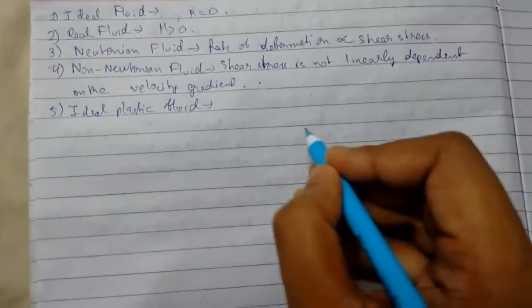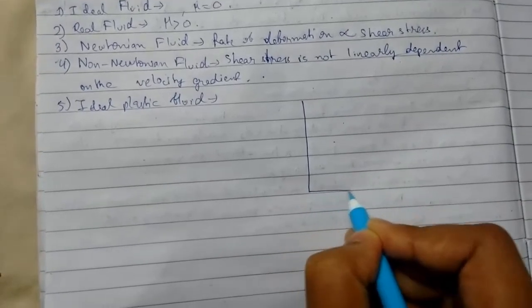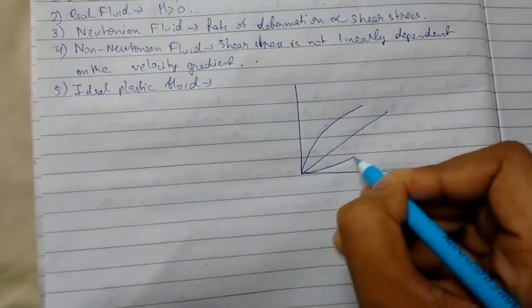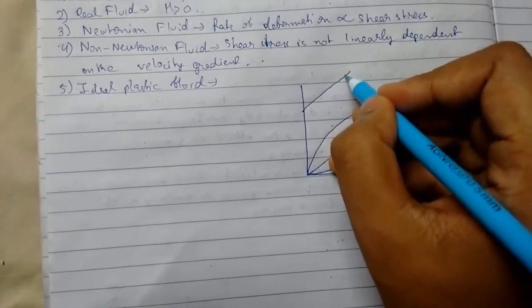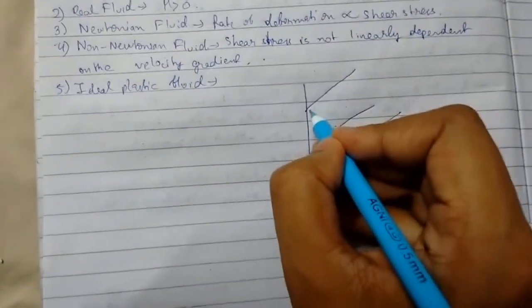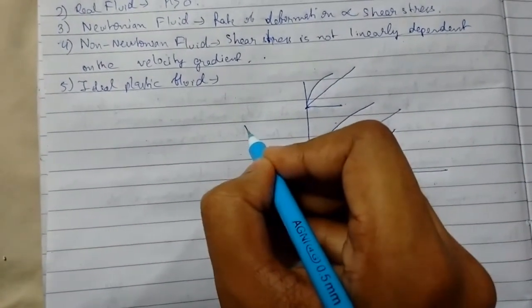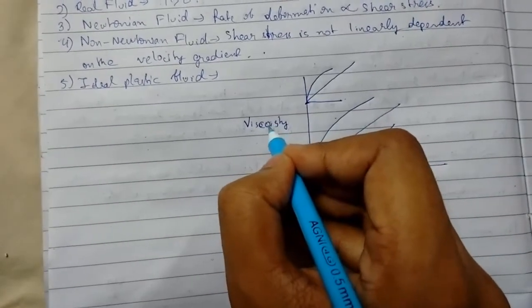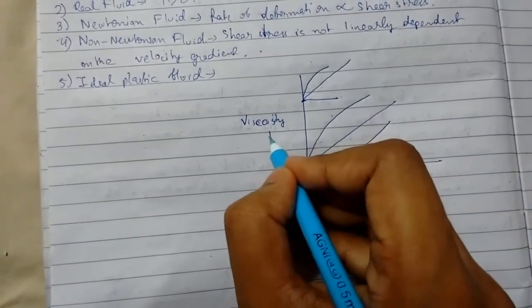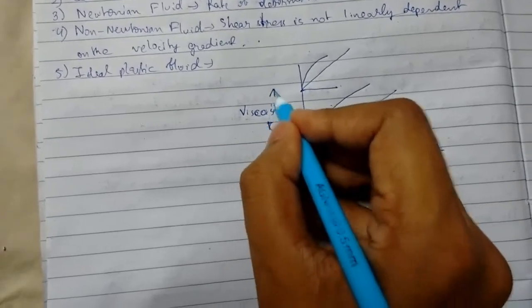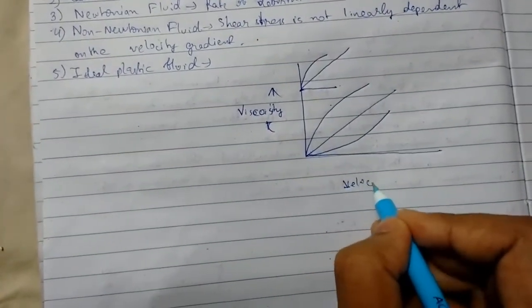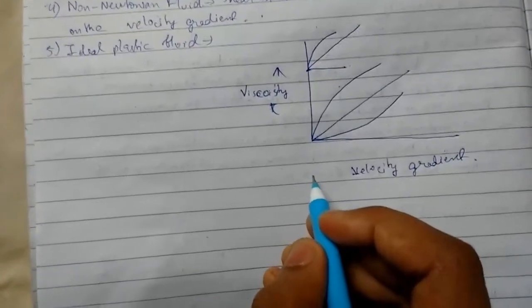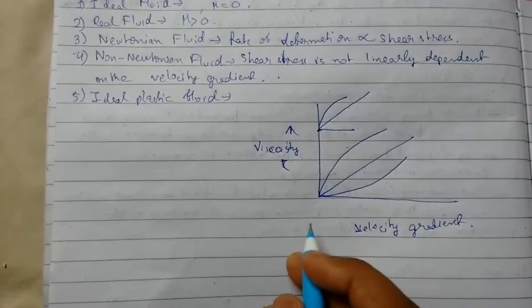So now we will see a diagram, very important diagram. It comes most of the time in examinations. So here viscosity, that is tau, and here it is velocity gradient.